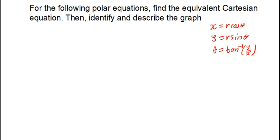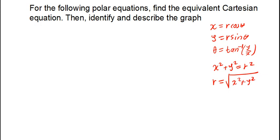Another thing to keep in mind is that x² + y² = r², and sometimes r can be written as the square root of x² + y². You might wonder why I pick only the positive part — it's because r is like the radius of a circle. When talking about a radius, it doesn't matter which side you're pointing to; it's always positive because it describes the distance from the center to the circumference.